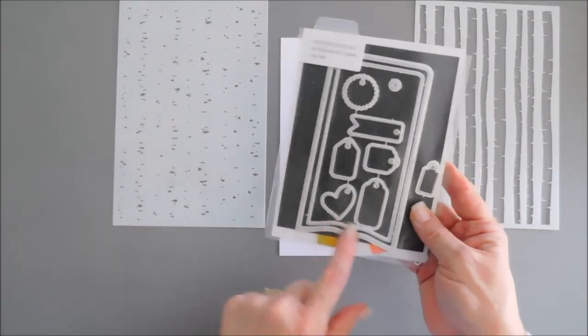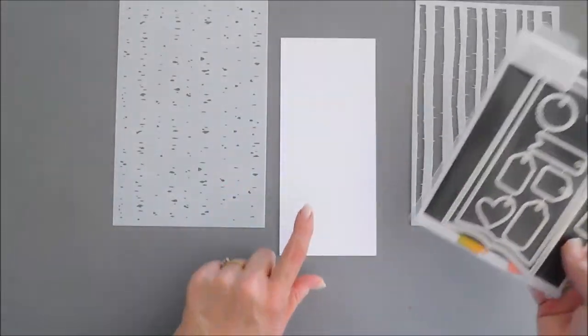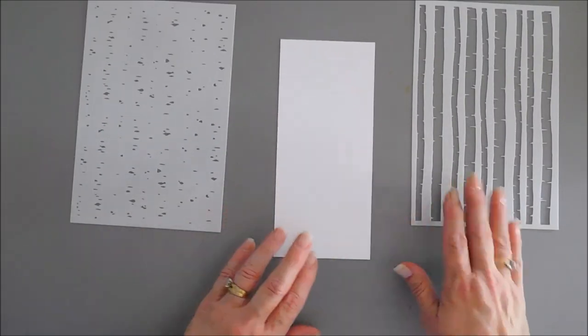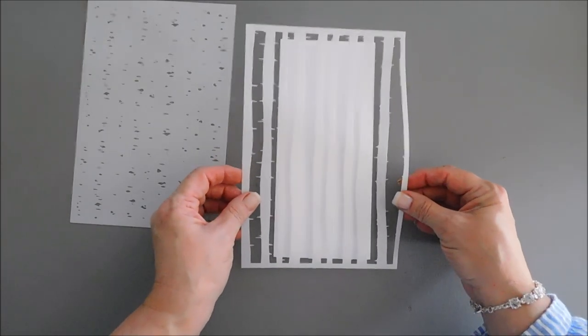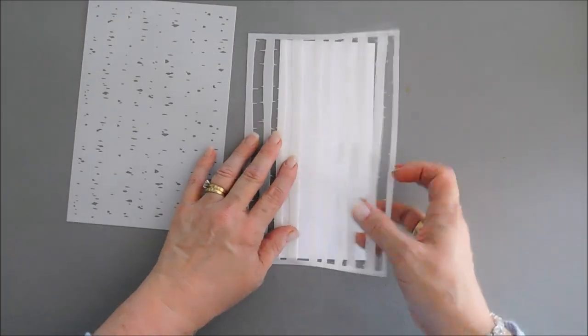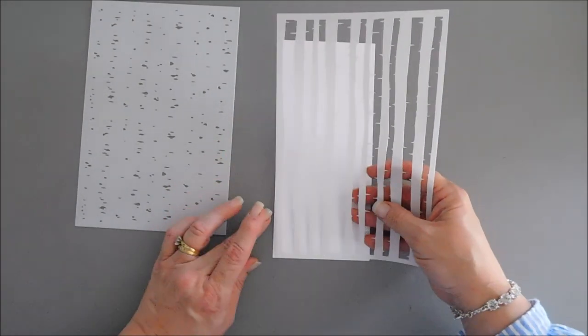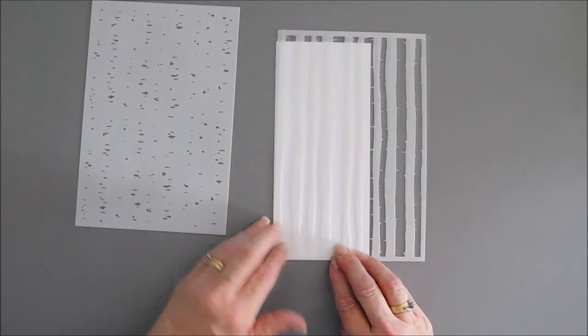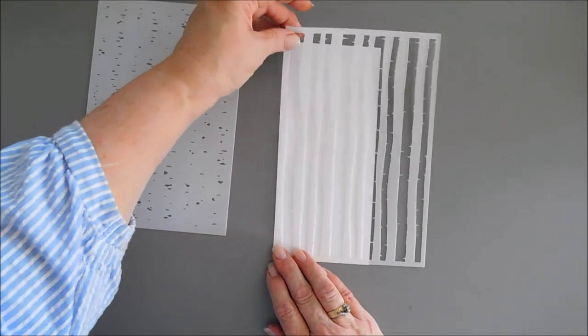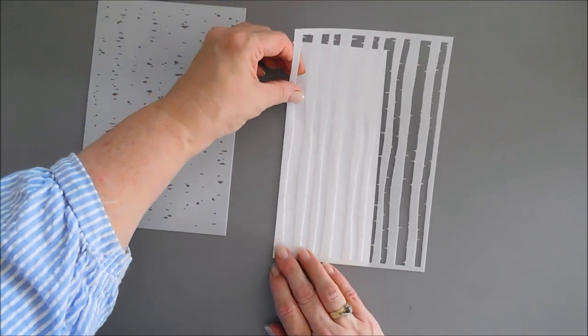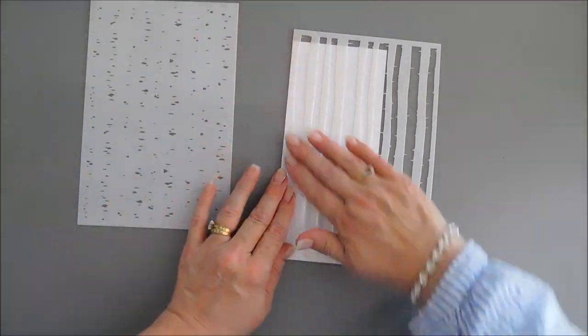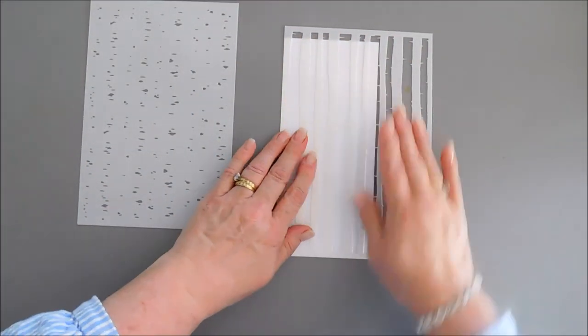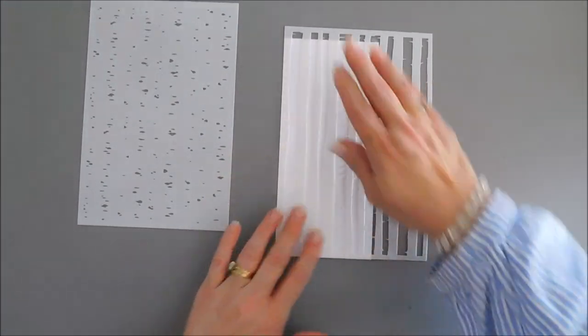We are going to create a background with our birch trees. I'm going to line this up, and the best way to do it is to put it corner to corner. That way my second piece I can just line up corner to corner and I know it's where it's supposed to go. That's a little cheat sheet there.